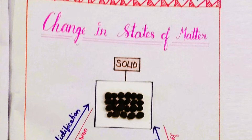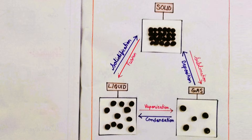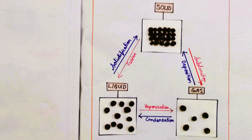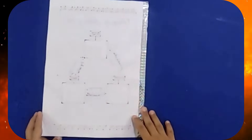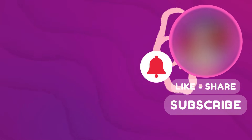Change in states of matter: Solid changes to liquid through the process of fusion. Liquid changes to gas through the process of vaporization. Gas changes to liquid through the process of condensation. Solid changes to gas through the process of sublimation, and gas changes to solid through the process of deposition.